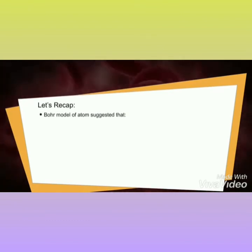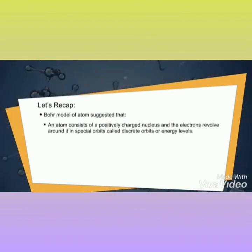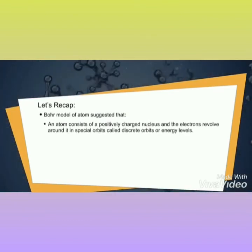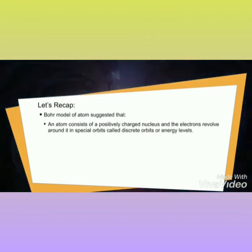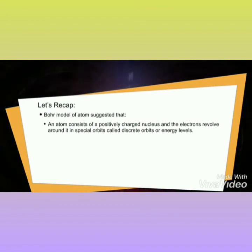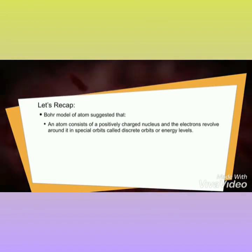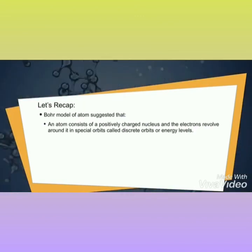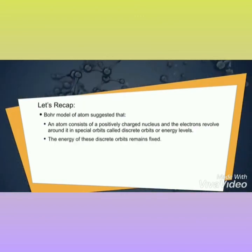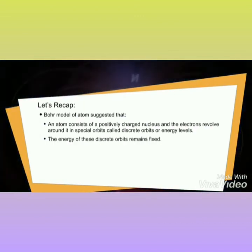The Bohr model of the atom suggests that an atom consists of a positively charged nucleus and electrons revolve around it in special orbits called discrete orbits or energy levels. The energy of the discrete orbits remains fixed.